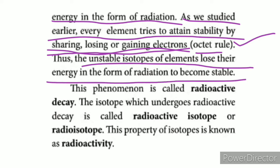The energy is lost as radiation. There are various forms of radiation around us — from mobile phones, infrared radiation, and radiation in space. When an unstable isotope emits this radiation, the process is called radioactive decay.